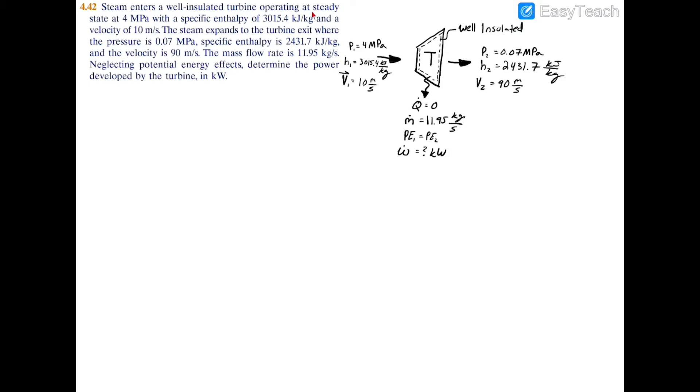Here we have steam entering a well-insulated turbine operating at steady state. At the inlet we're given the pressure, specific enthalpy, and the velocity, and then at the exit we're also given the pressure, specific enthalpy, and the velocity.